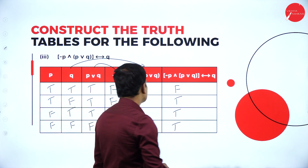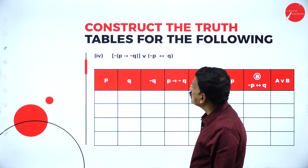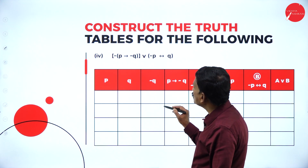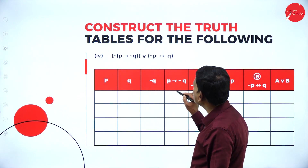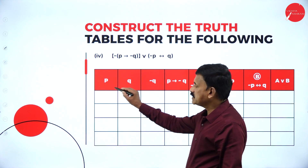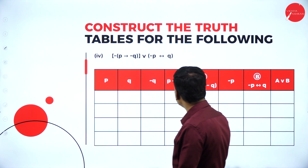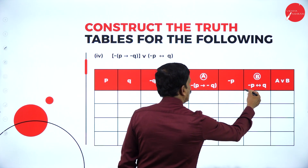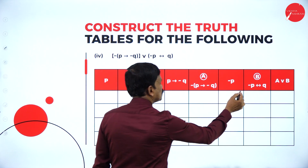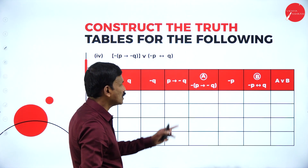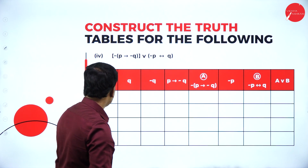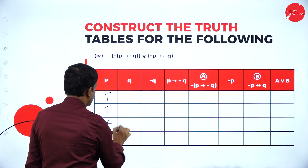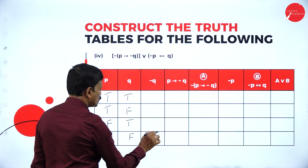Now move on to the next problem: negation P conditional to negation Q, disjunction negation P biconditional to Q. Split as: P, Q, negation P, P conditional to negation Q, negation of P conditional to negation Q, negation P, negation P biconditional to Q — with the first and second parts connected by disjunction. For P: true, true, false, false; for Q: true, false, true, false.